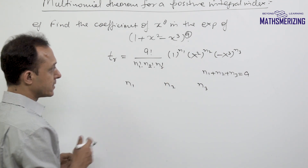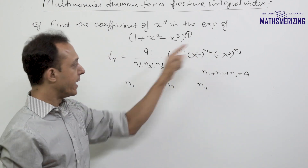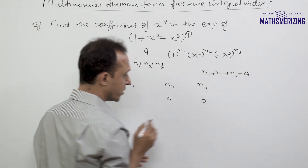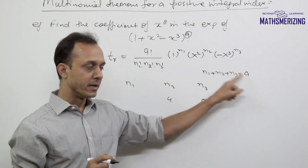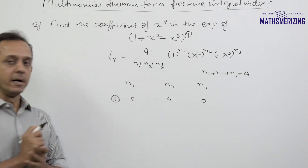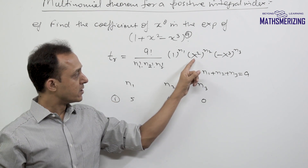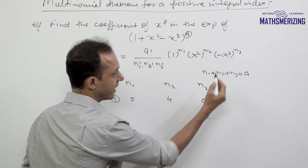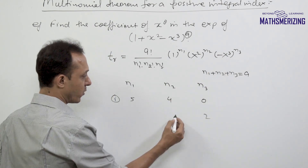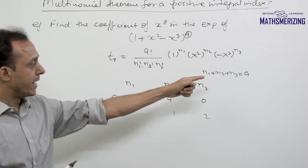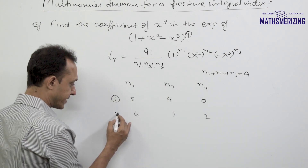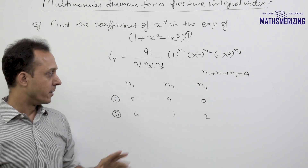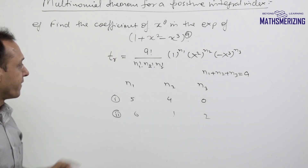One possible combination: take n2 as 4, so x² to the power 4 gives x⁸, with n3 as 0 and n1 as 5. Another possibility: take n2 as 1, giving x to the power 6 from x², then n3 as 1 giving x³, so 6 plus 2 equals 8. Then n1 is 6, n2 is 1, n3 is 2. These are the only two combinations that yield x to the power 8.